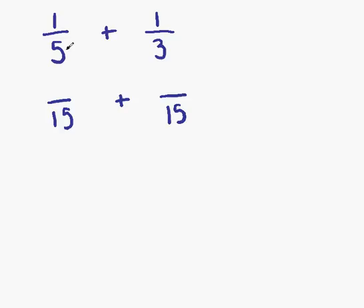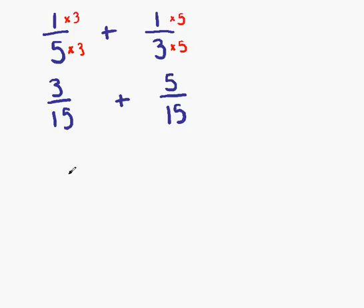In order to achieve this, we must multiply the first fraction by 3. 5 times 3 gives us 15 on the bottom. In order for the fraction to stay equivalent, we must multiply the top by the same number. Similarly, on the second fraction, we multiply by 5, so the top is also multiplied by 5. 1 times 3 gives us 3 on the top, and 1 times 5 gives us 5 on the top. Now we have 3 fifteenths plus 5 fifteenths, which gives us 8 fifteenths.